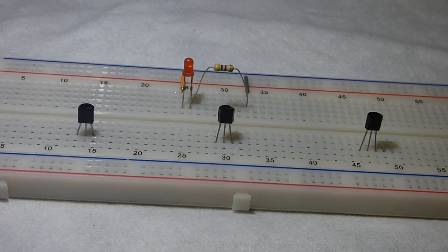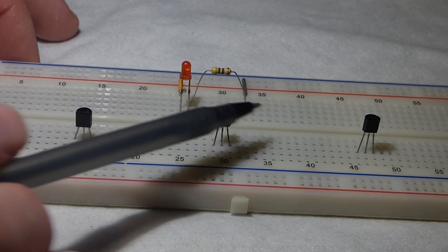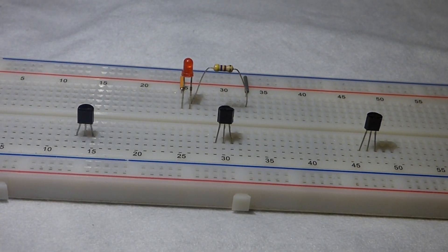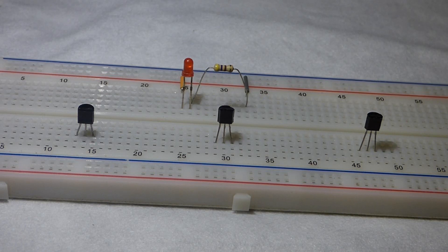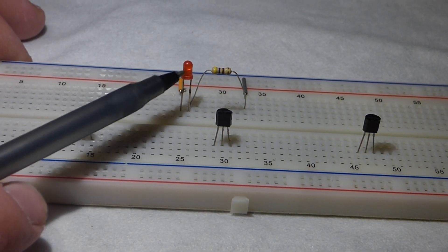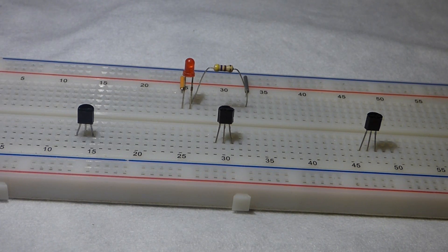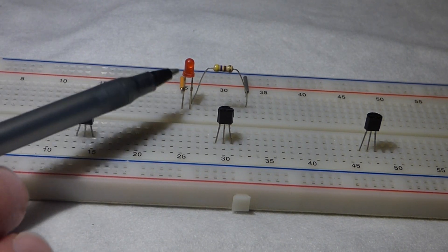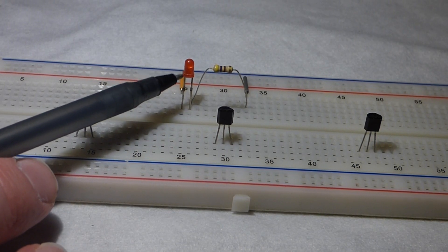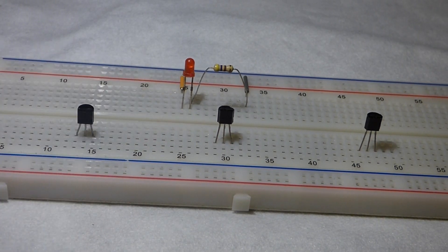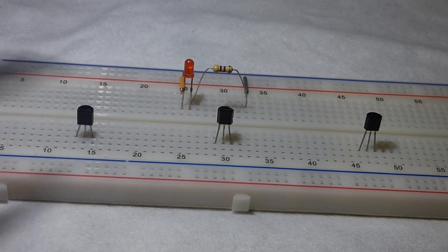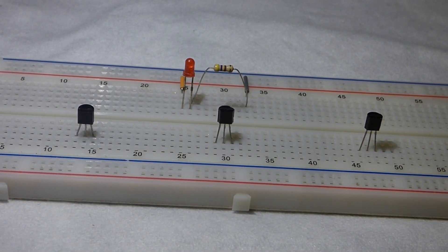So now, these are bipolar junction transistors. All 3 of these transistors are made of 2 types of semi-conductive material. That's why it's called bipolar. Just like the LED. It has an N type and a P type. But, the LED has N type on one side and P type on the other.